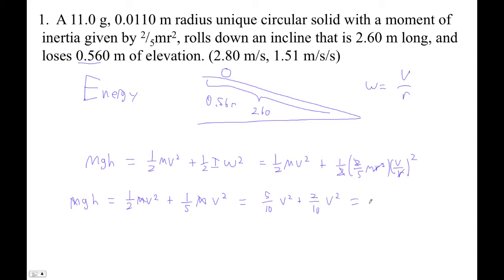Which is 7/10v². So now we can solve for v. 10GH over 7 equals v². So v at the bottom of the plane is square root of 10GH over 7.